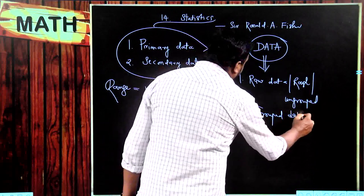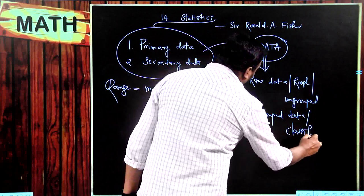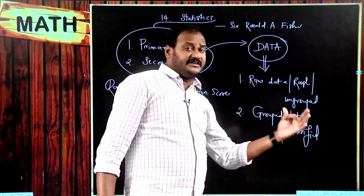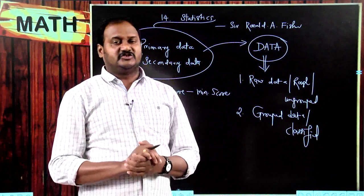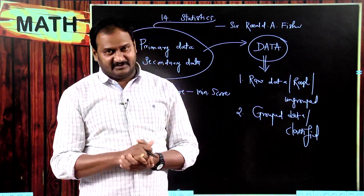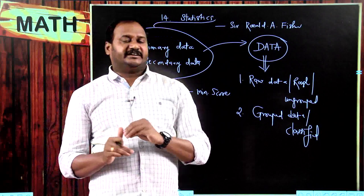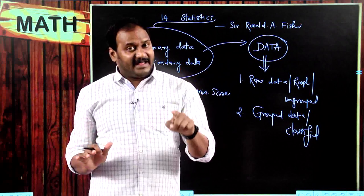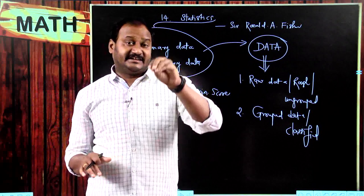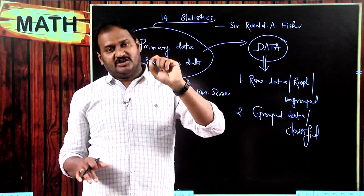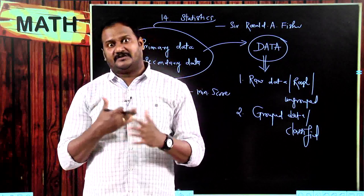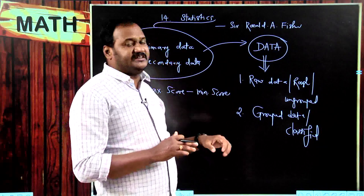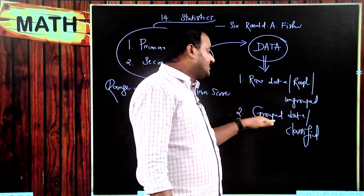To make grouped data, I need to form a frequency distribution table. Frequency means the number of observations that repeat in a particular way. For example, if 5 students all got exactly 35 marks, the number 5 is the frequency. With the help of frequency distribution, I can convert raw data into classified or grouped data.